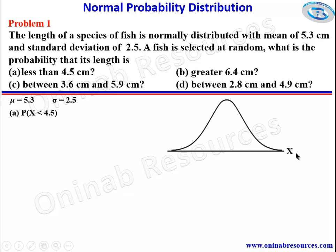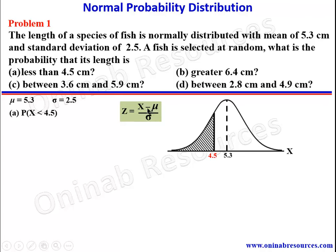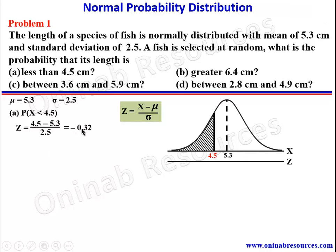So we have it here. This is the x-axis, and the mean is 5.3 at the line of symmetry. Less than 4.5 is to the left — this is 4.5, and this is the area we are looking for. We convert this x value to a z-score with the formula z = (x − mean) / standard deviation. So z = (4.5 − 5.3) / 2.5, which gives us negative 0.32.